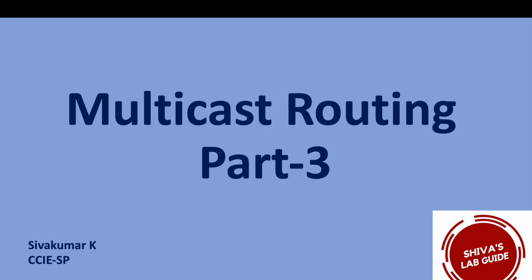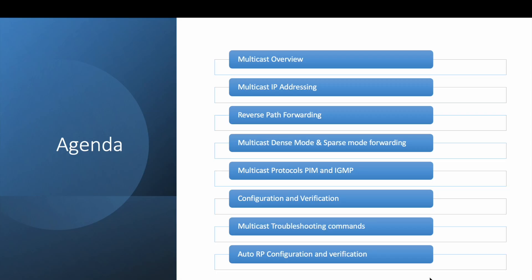Hi guys, this is the Part 3 video about multicast routing. In the previous videos I explained about multicast overview, its IP addressing, RPF checks, the dense mode and the sparse mode, and protocols like PIM and IGMP. In this video we will see how to configure multicast in a lab environment, how to verify it is working, and we will also see multicast troubleshooting checks. I have given 6-point troubleshooting steps which we can use in the lab and also in production.